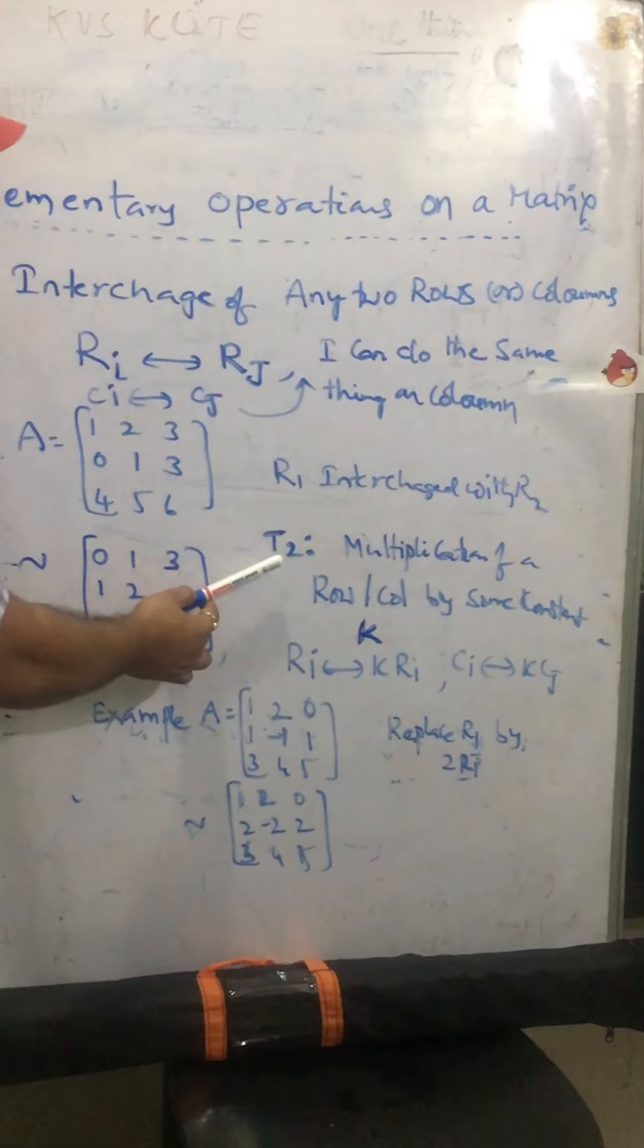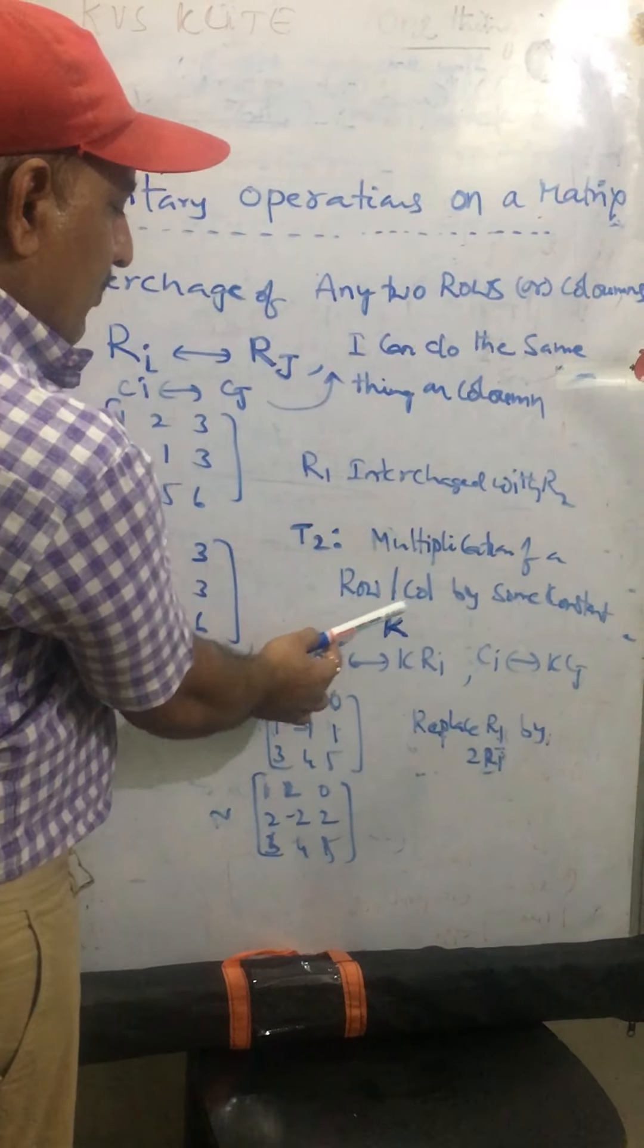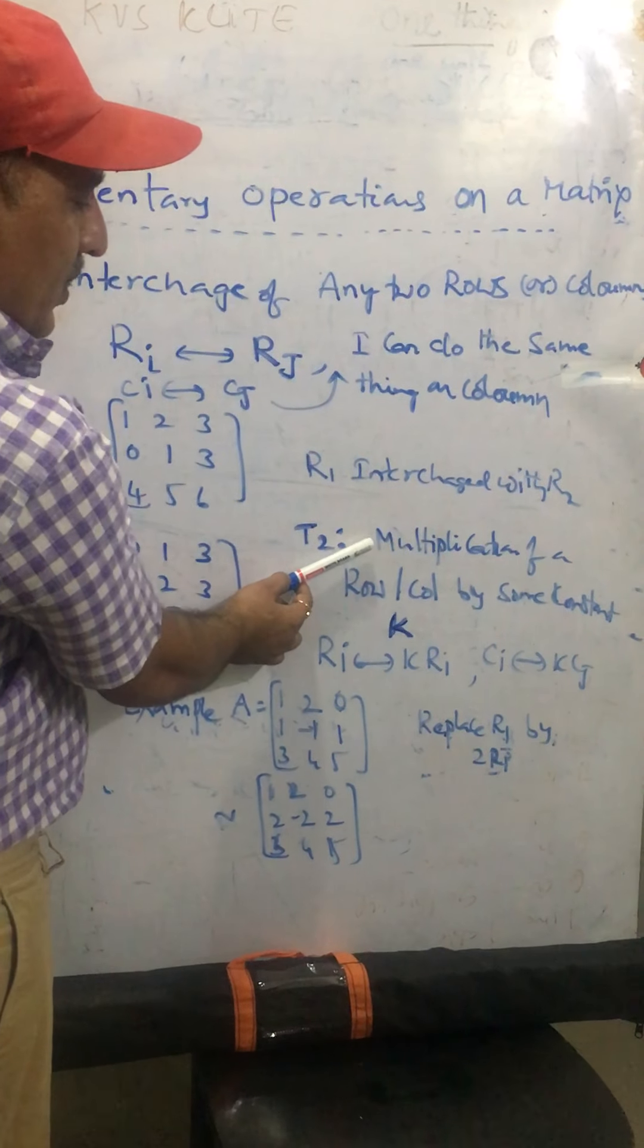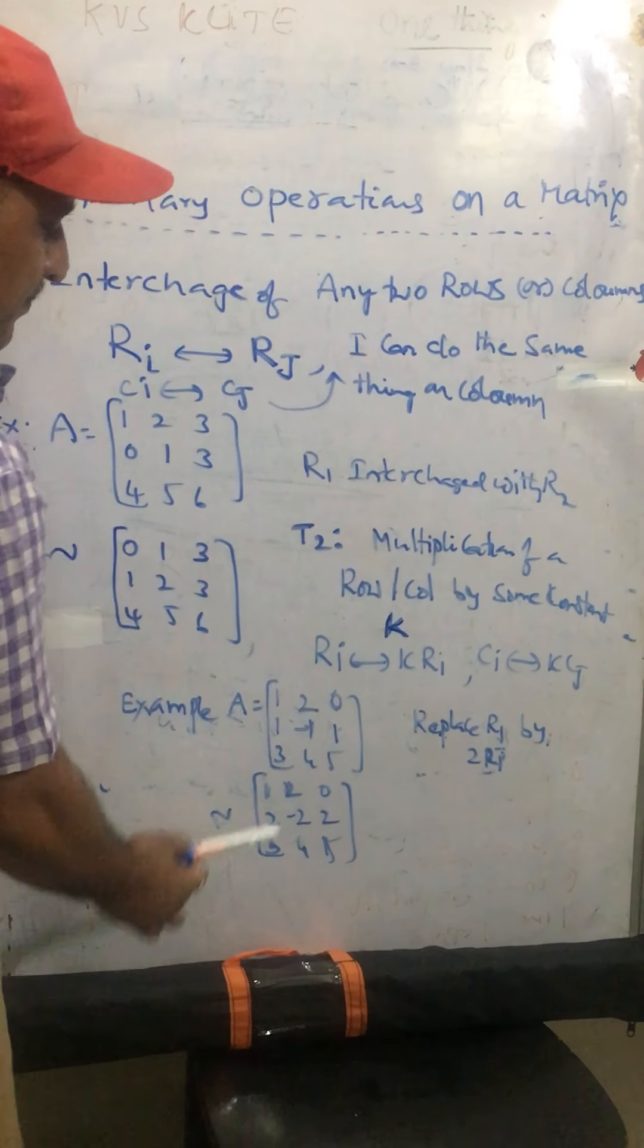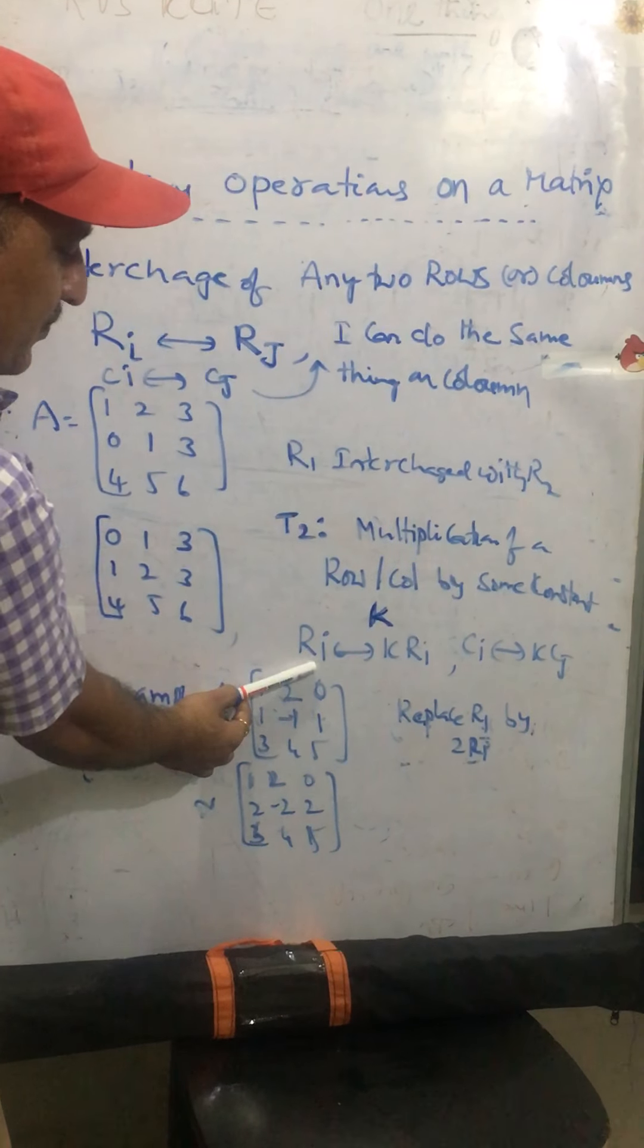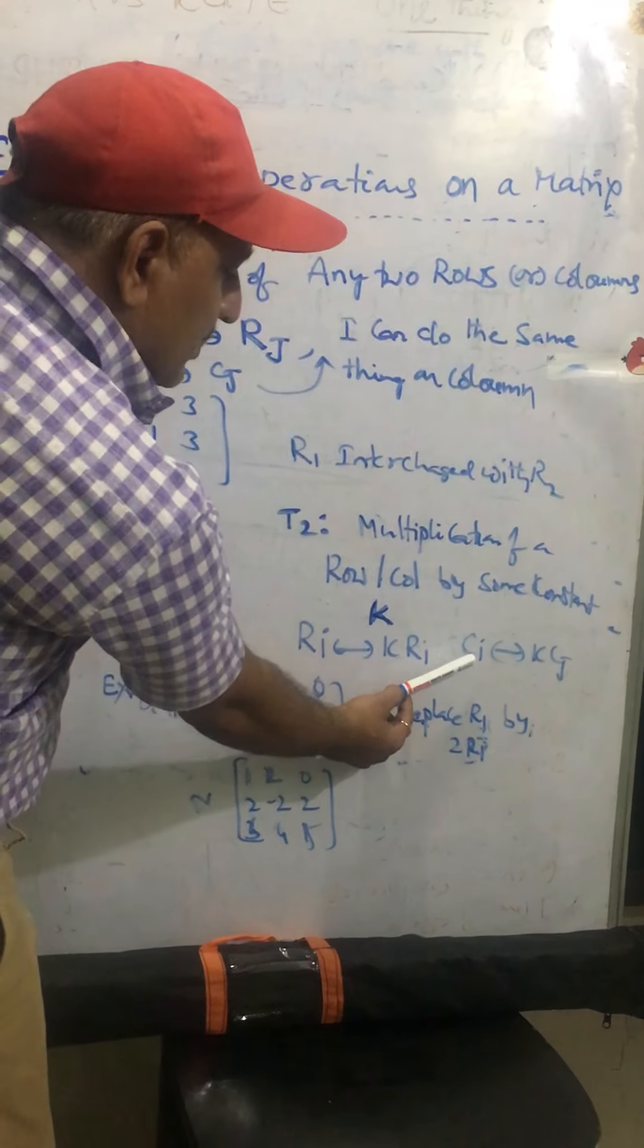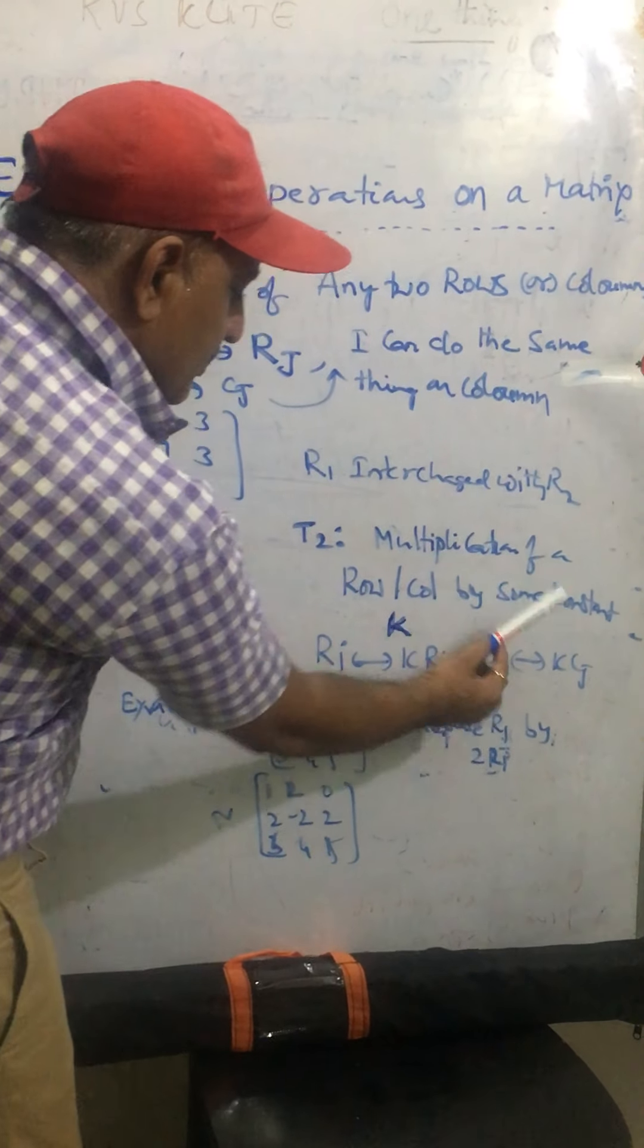When you come to second transformation, T2, so here, multiplication of a row or column by some constant, replacing one row elements, or one column elements, with multiplying some constant K. As a symbol, replacing ith row by K times of ith row. Or you can say, replacing elements of column I with K times of column J.